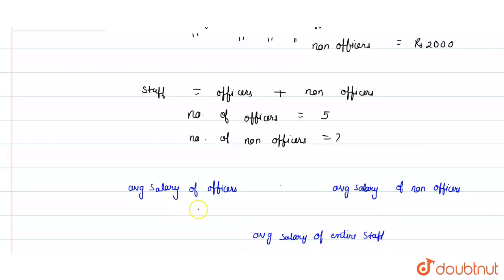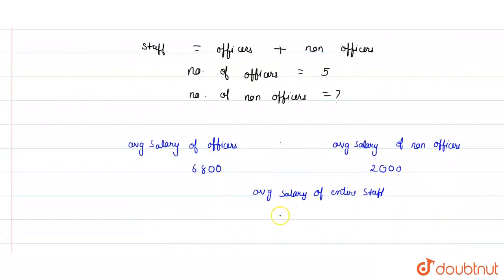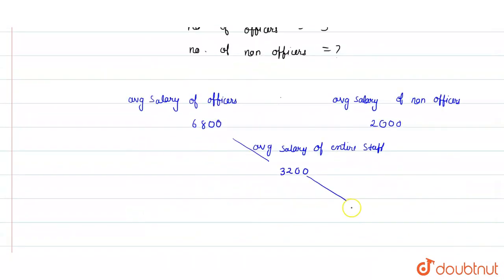So the values are: Rs. 6800 on one side, Rs. 2000 on the other side, and Rs. 3200 in the middle. Now we subtract: 6800 minus 3200, and on the other side we subtract the greater value — that is 3200 minus 2000.